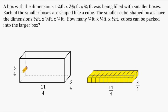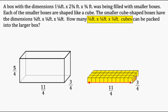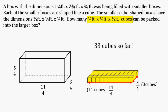At this point we have one layer of boxes that fits nicely into the bottom of the larger box, but there's still more space to fill. In one direction we fit eleven boxes side by side, and in the other we fit three boxes side by side — three rows of eleven — so three times eleven gives us 33 boxes in the bottom layer so far.